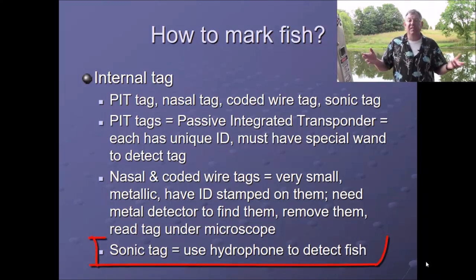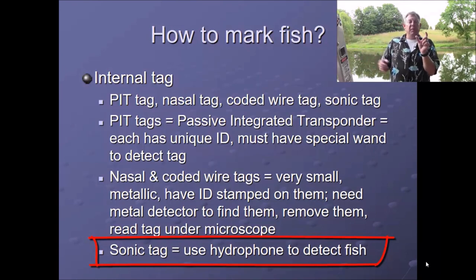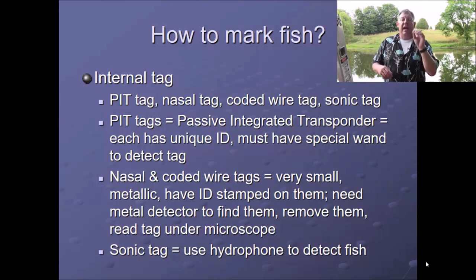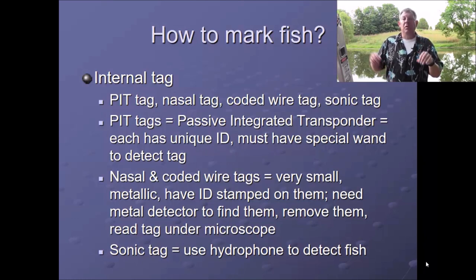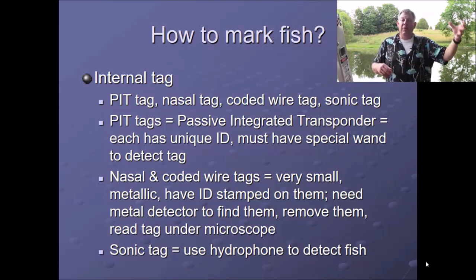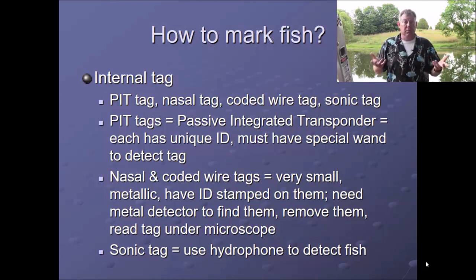Around here we've been doing a lot of research with sonic tags, which are a little bigger — the ones we use are about the size of a roll of dimes. You knock the fish out, cut a small incision, insert the tag, sew them back up, and once they recover they can swim off. The sonic tag emits a sonic signal unique to that fish. You can go around and put a hydrophone in the water and listen — if you hear that tag and identify the individual numbers, you can identify and follow that fish and look at their movement behavior. Or you can put a hydrophone that just sits out in the lake, and when a fish swims by, it detects and records which fish it was.